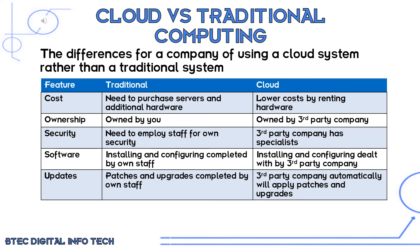Comparing cloud versus traditional computing — where traditional means saving things locally onto your device. Looking at cost first: the traditional way means you need to buy all the hardware yourself — new hard drives, new servers, new equipment. With the cloud, you can massively reduce costs by renting equipment from other companies. For ownership, with traditional it's owned by you because you bought it yourself, whereas with the cloud it's owned by a third party company.